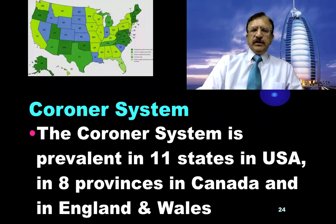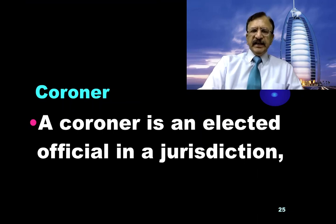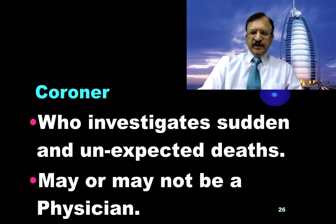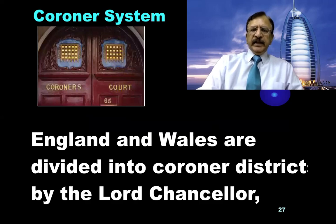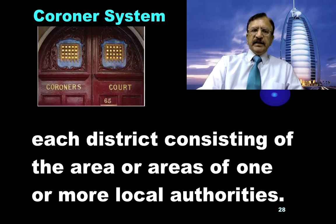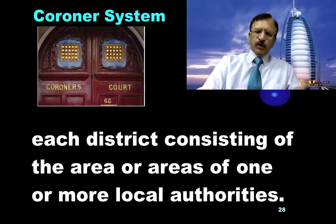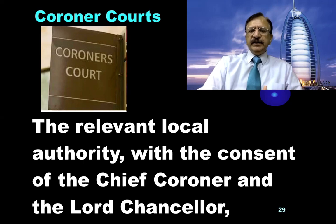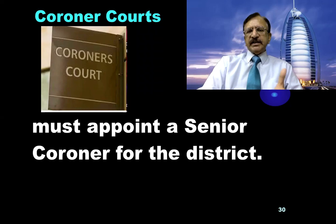The coroner system is prevalent in 11 states in the USA, 8 provinces in Canada, and in England and Wales. A coroner is an elected official in a jurisdiction who investigates sudden and unexpected deaths and may or may not be a physician. In England and Wales, coroner districts are divided by the Lord Chancellor, and each district consists of the areas of one or more local authorities. The relevant local authorities, with the consent of the chief coroner and the Lord Chancellor, must appoint a senior coroner for the district.